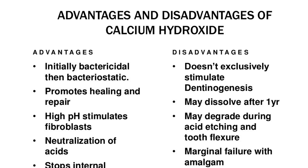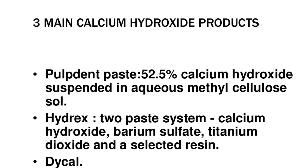Advantages of calcium hydroxide: Initially bactericidal then bacteriostatic, promotes healing and repair, high pH stimulates fibroblasts, neutralization of acids, stops internal resorption, inexpensive and easy to use, particles may obliterate open tubules. Disadvantages: Doesn't exclusively stimulate dentinogenesis, may dissolve after one year, may degrade during acid etching and tooth flexure, marginal failure with amalgam condensation, doesn't adhere to dentin or resin restoration.